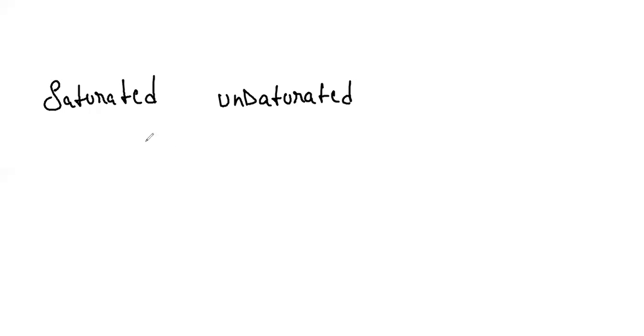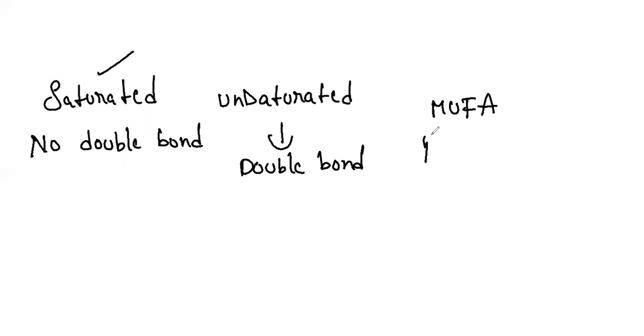Fatty acids are of two types: saturated and unsaturated fatty acids. Saturated fatty acids have no double bond. Saturated fatty acids are quite harmful for the body than unsaturated fatty acids. If you have only one double bond then it is monounsaturated fatty acids. If it has more than one double bond then it is polyunsaturated fatty acids.